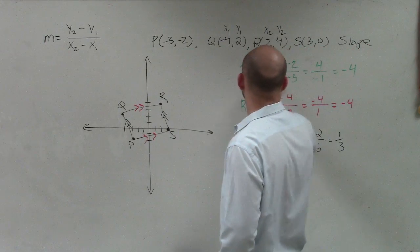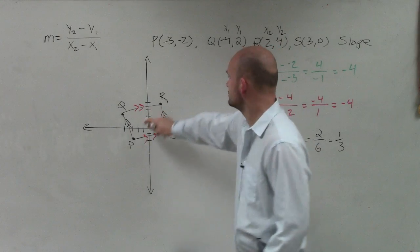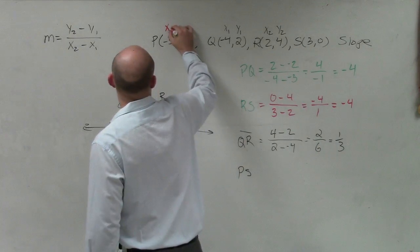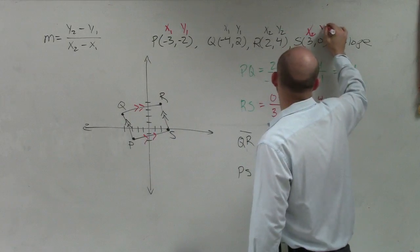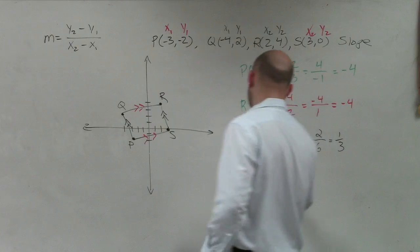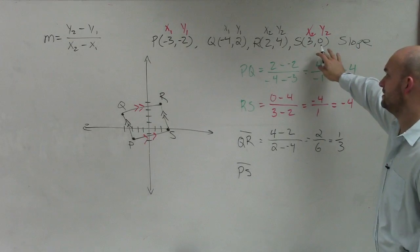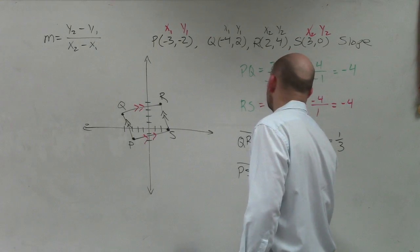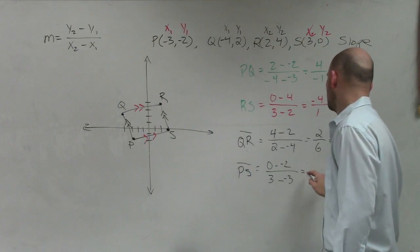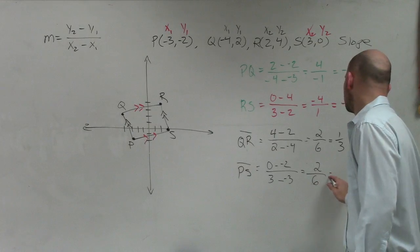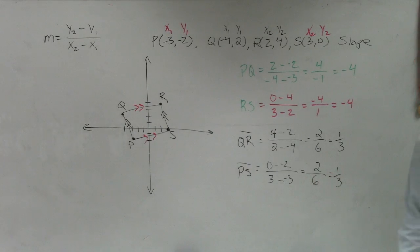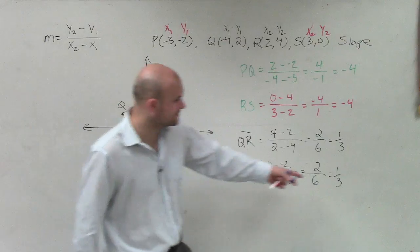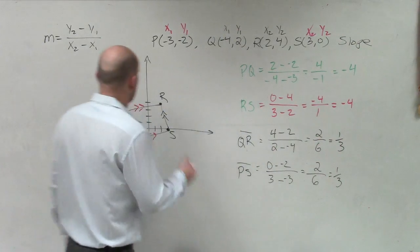And then let's check PS. I want to make sure PS has the same slope. To do PS, I'll label these x1, y1, x2, y2. I'm doing PS and then P. So I'll do 0 minus negative 2 and 3 minus negative 3. Therefore, I have 2 over 6, which equals 1/3. Are those two parallel? Do they have the same slope? Yes, so that means they're parallel.